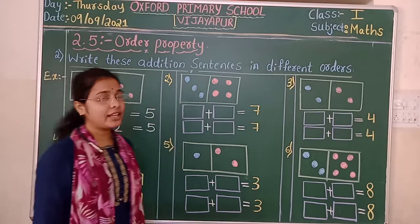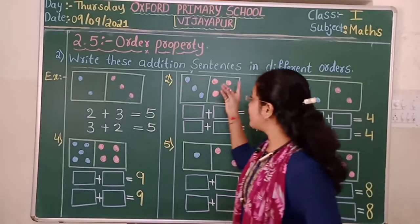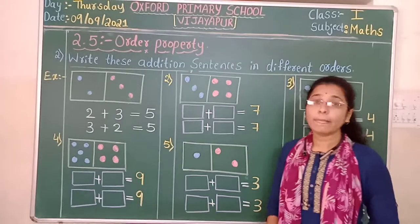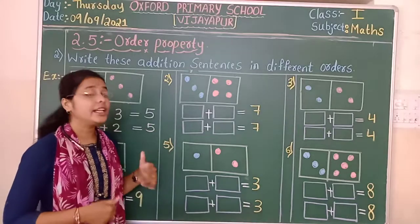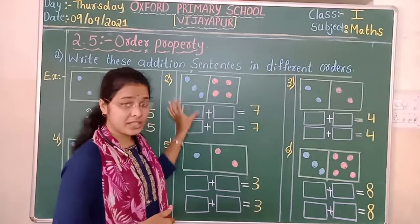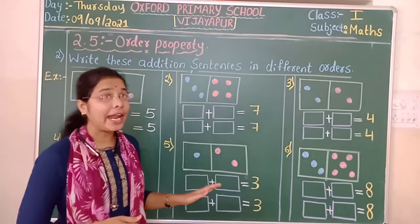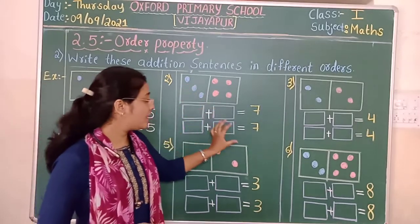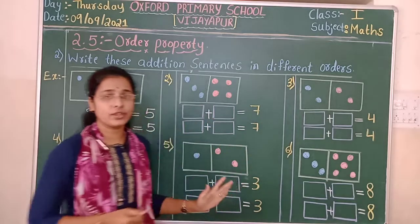The question we are working on: write this addition sentence in different orders. These are all addition sentences — we are learning the addition sign. So we have to write the addition sentence in a different order. First, we write it as it is — first addend, second addend. Then we interchange the addends: the second addend becomes the first. Then we check whether there is any change in the sum or not.